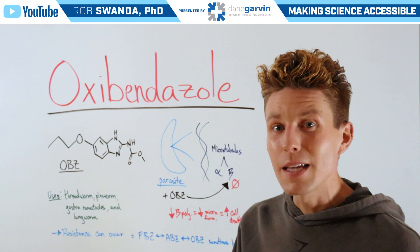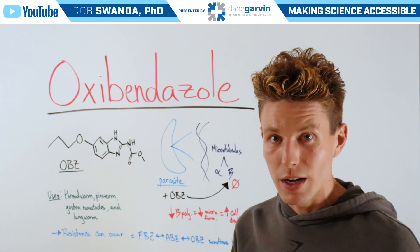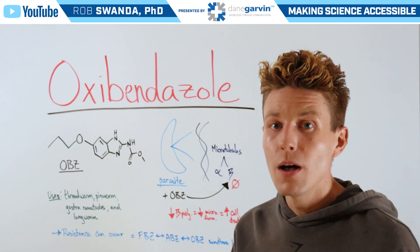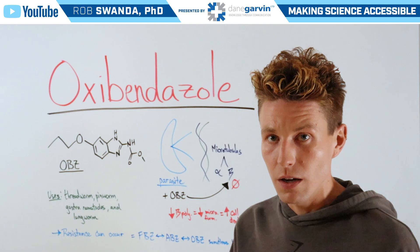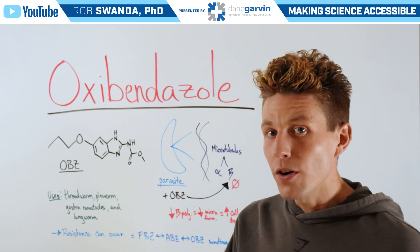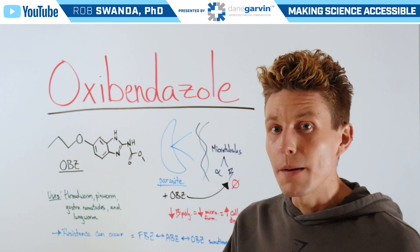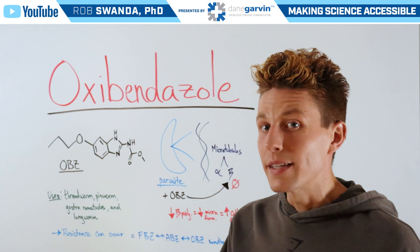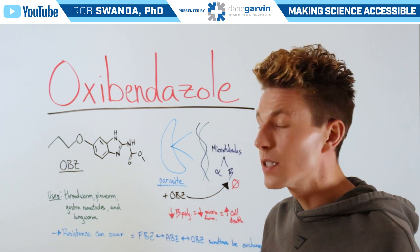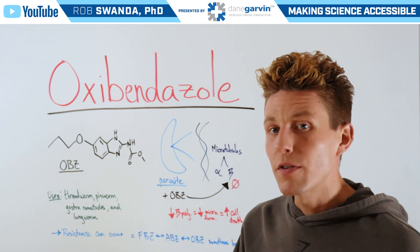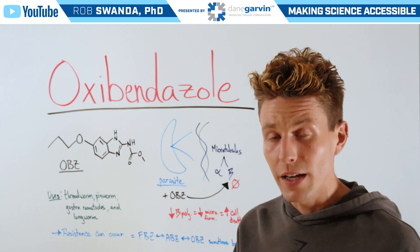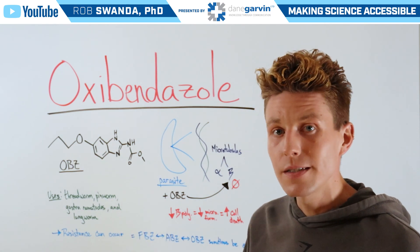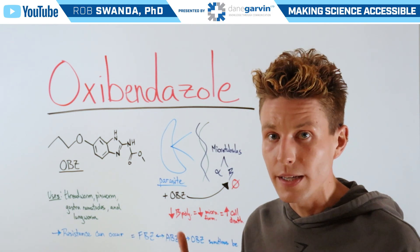You may notice that some of these different drugs work very similarly, such as fenbendazole, mebendazole, or albendazole. That's because, similar to bacterial resistance to antibiotics, the same thing can happen for parasites. So we need to have a variety of different pharmaceuticals available in case those parasites do become resistant to certain chemicals.